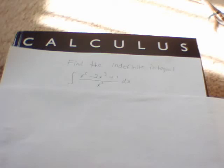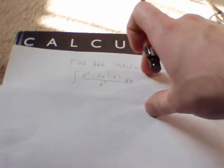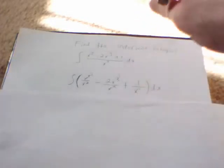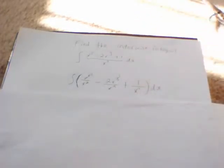Today's calculus question is find the indefinite integral of x to the fifth minus 2x cubed plus 1 divided by x squared. The first step is to take the x squared and have it under each individual top number.